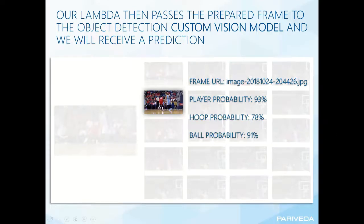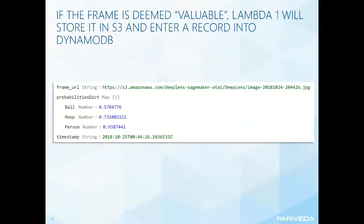Once the frame is deemed valuable, the first Lambda will store it into S3 — which is basically a database in the cloud that stores unstructured data — and it will record a row into DynamoDB. The DynamoDB record includes a probabilities dictionary with the ball, hoop, and person values, as well as a timestamp.